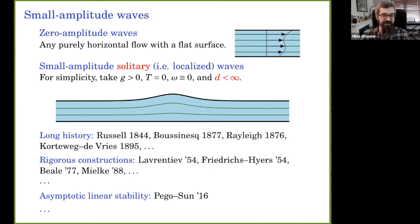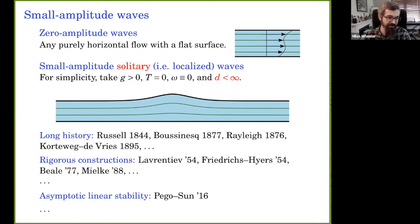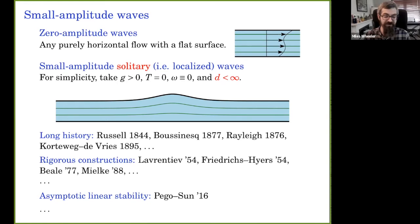Another well-studied class: solitary waves, which are localized in x rather than periodic. For the gravity-only case, rigorous constructions are more technically sophisticated because the problem is weakly nonlinear. Friedrichs–Hyers used a delicate implicit function theorem argument exploiting the steady KdV equation; Beale uses Nash-Moser; Mielke uses dynamical systems, center manifold reductions for elliptic equations in cylinders. Regarding stability: there's a proof of asymptotic linear stability for small solitary waves, but nonlinear stability is completely open.